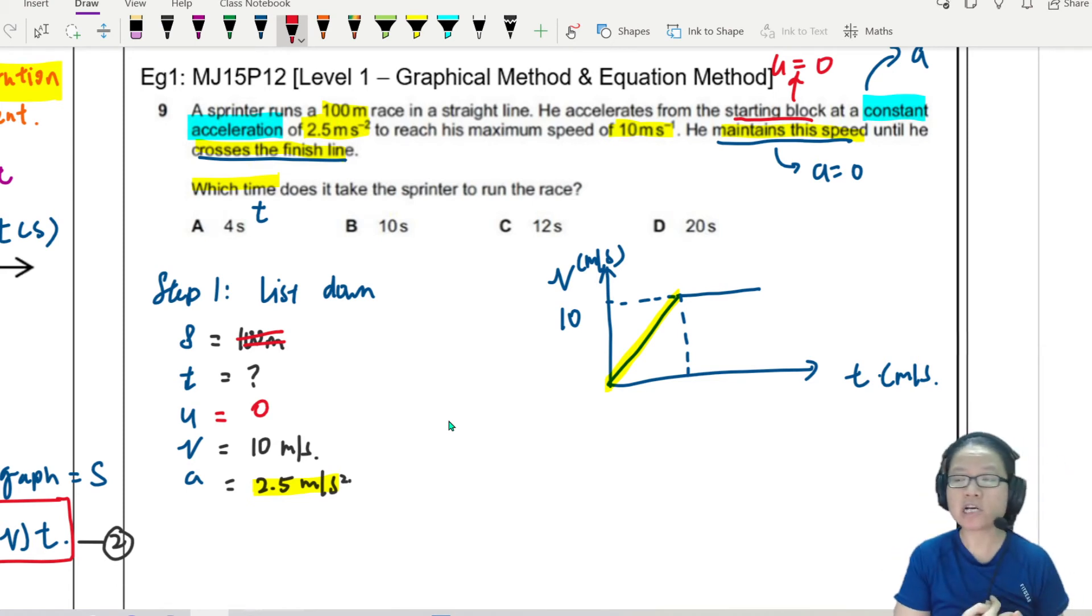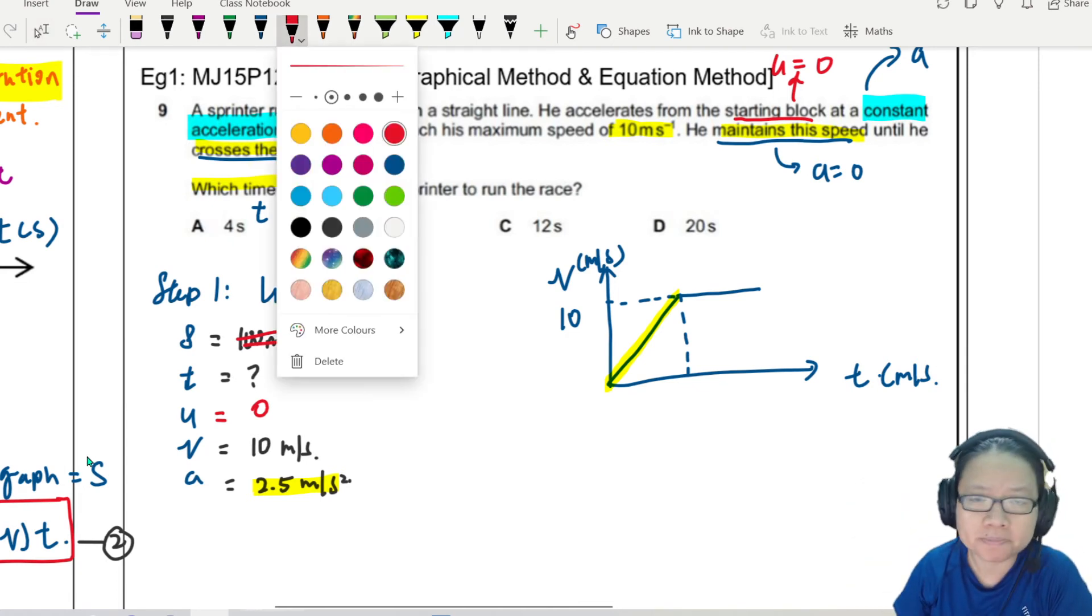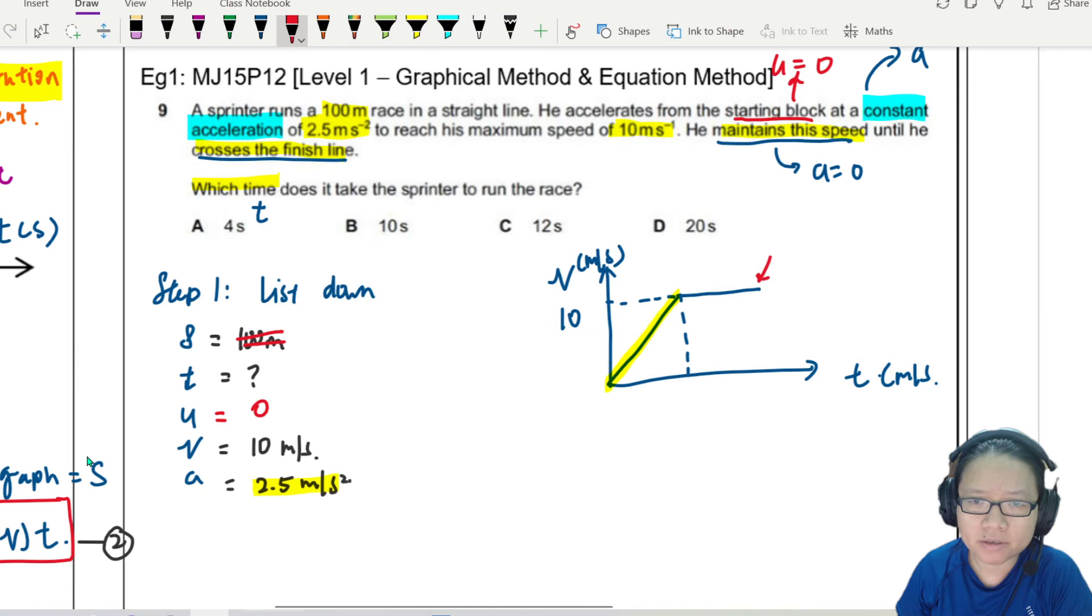So meaning he ready, set, go. Run, run, run. Reach 10 already. Maintain all the way to 100 to the finish line. So finish line is here. Let's put here. Finish.